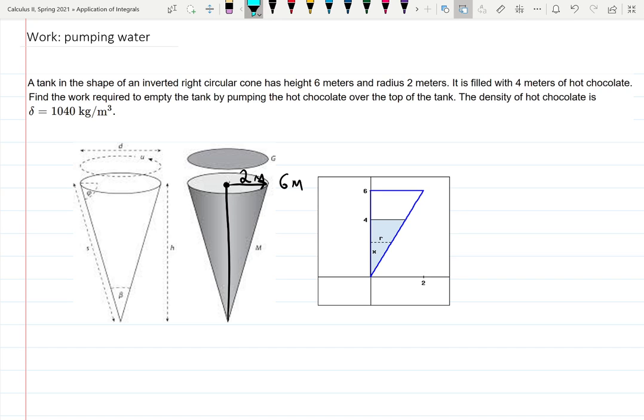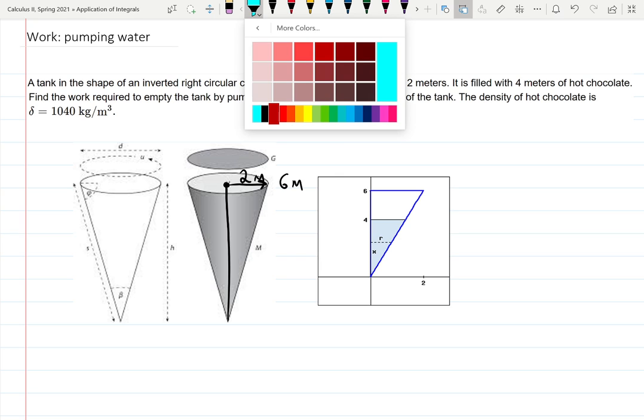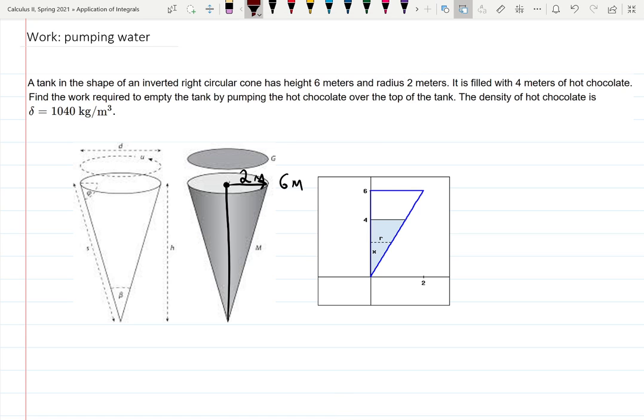It's filled in, not fully, but only four meters of chocolate. This time I'll use a chocolate color instead of blue. Four meters filled in with chocolate. They switched from water to chocolate in these types of problems because the density will be different, and it's more fun to imagine chocolate. This is four meters. Find the work required to empty the tank by pumping the hot chocolate over the top of the tank. The density of hot chocolate is given as Delta.